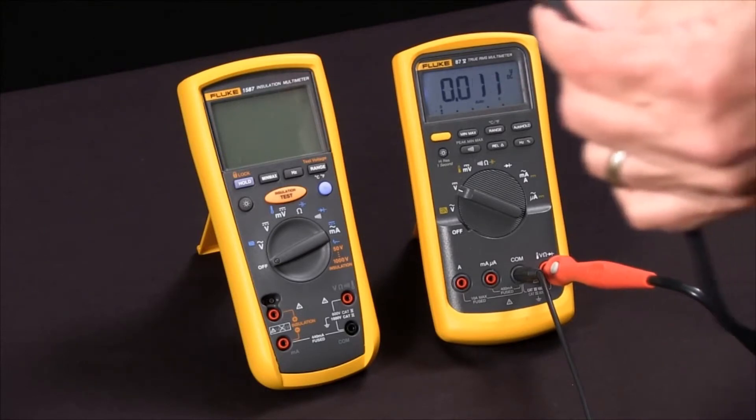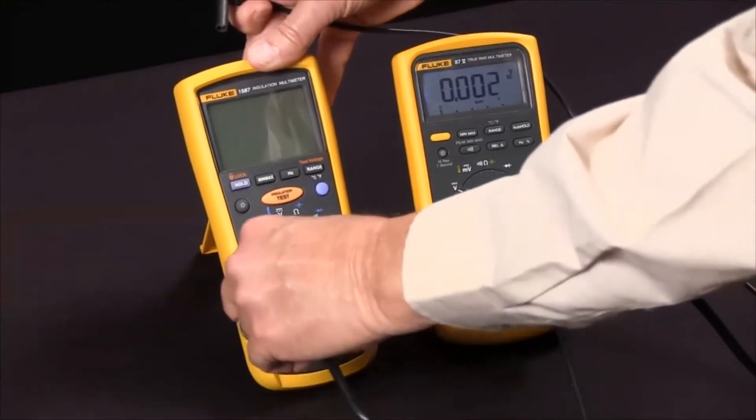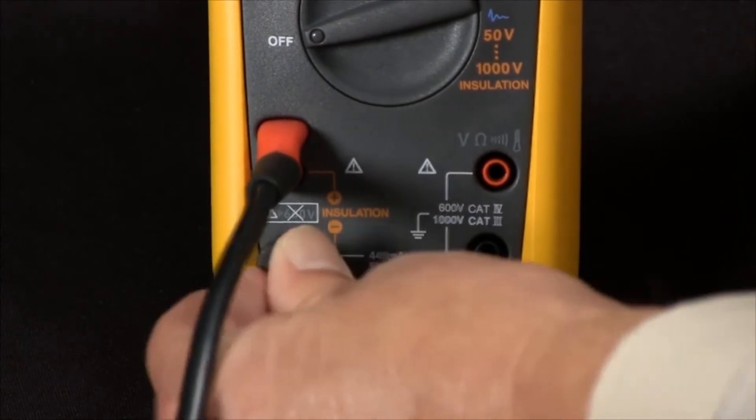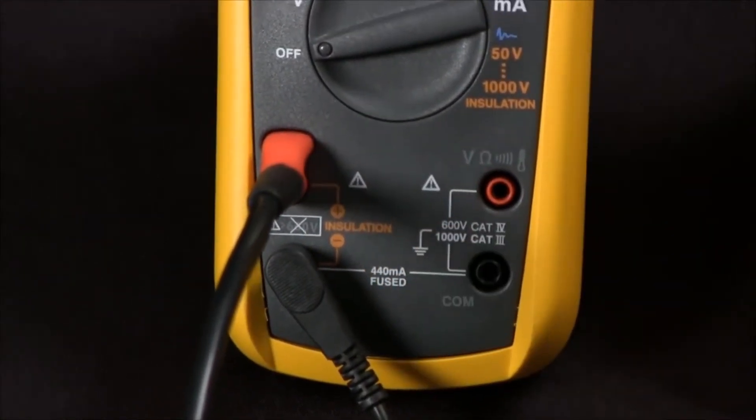So first we'll connect our special probe that only fits in one way and our low side of that. So we'll connect those across the positive and the negative of the insulation voltage.